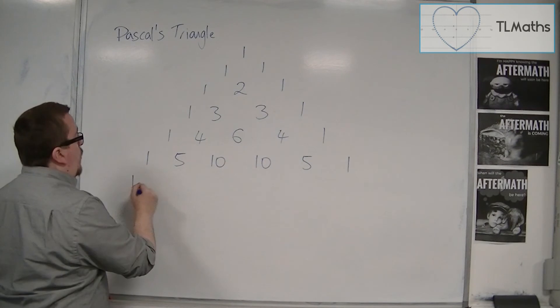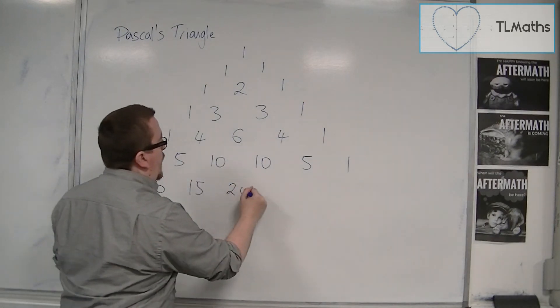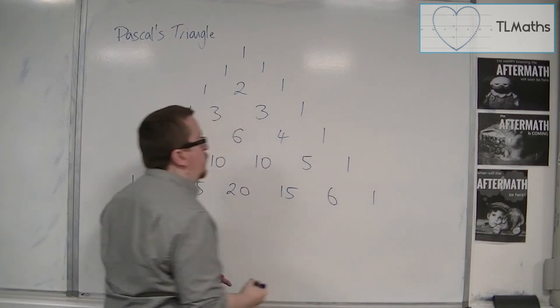And one more row: 1, 6, 15, 20, 15, 6 and 1.